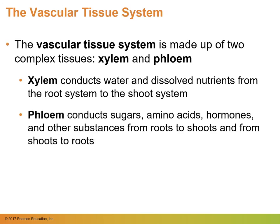Let's go ahead and take a look at the vascular system in plants. Similar to humans, plants also have systems that move around their food and water. In plants, xylem and phloem are continuous cells that form long tubes throughout the entire plant. Xylem is primarily in charge of conducting water and dissolved nutrients from the root system to the shoot system. Phloem conducts sugars, also known as glucose, which is produced by photosynthesis. It also conducts amino acids, hormones, and other substances from roots to shoots and from shoots to roots.